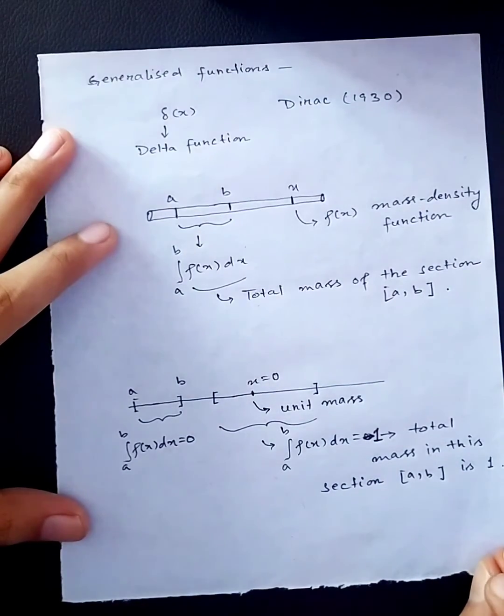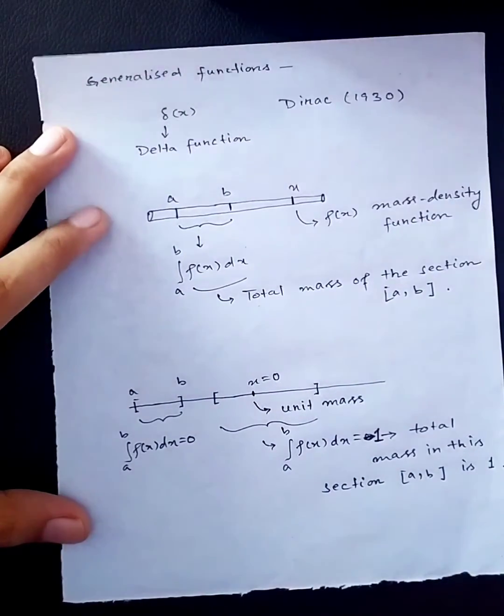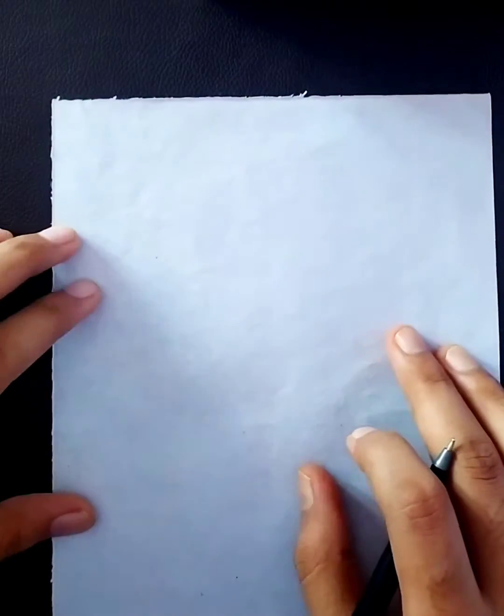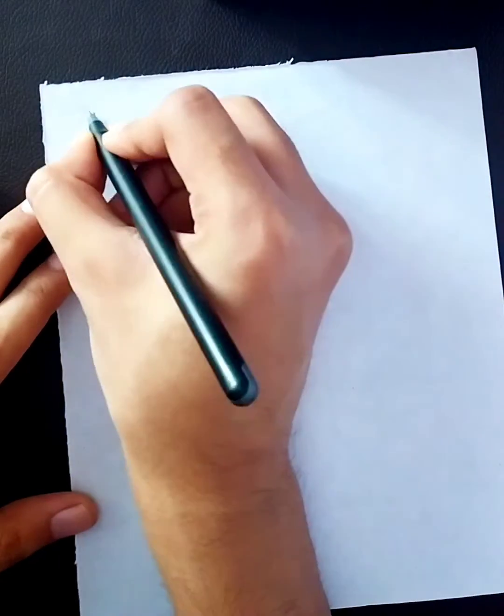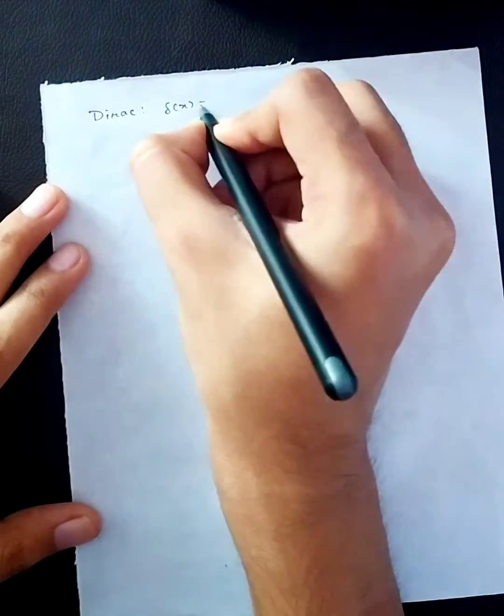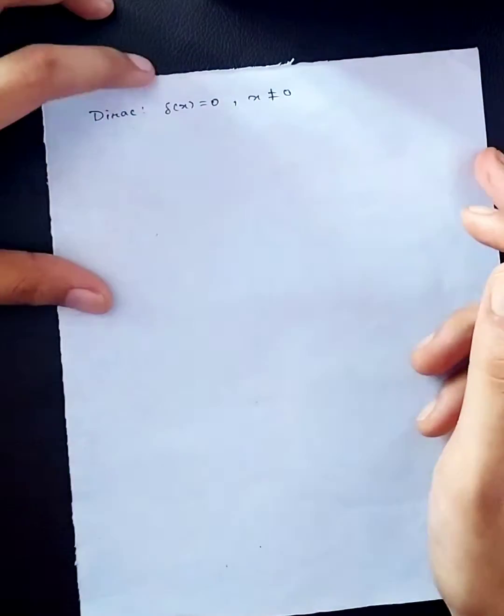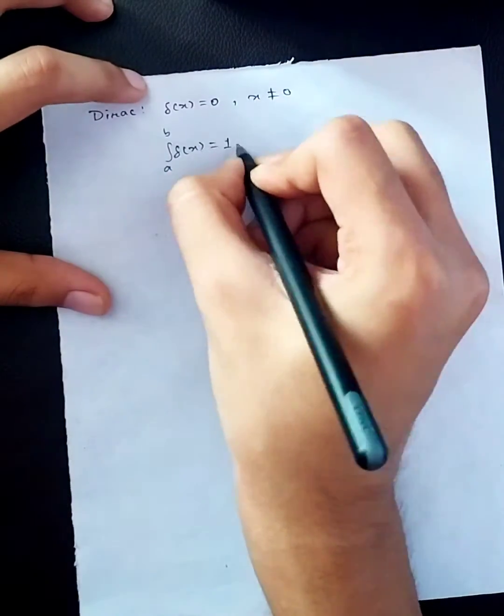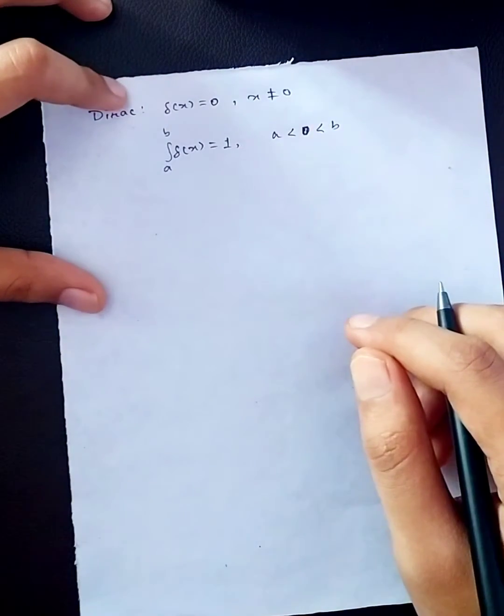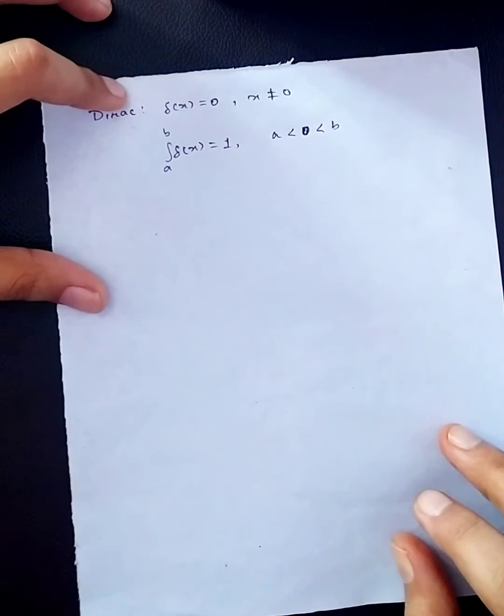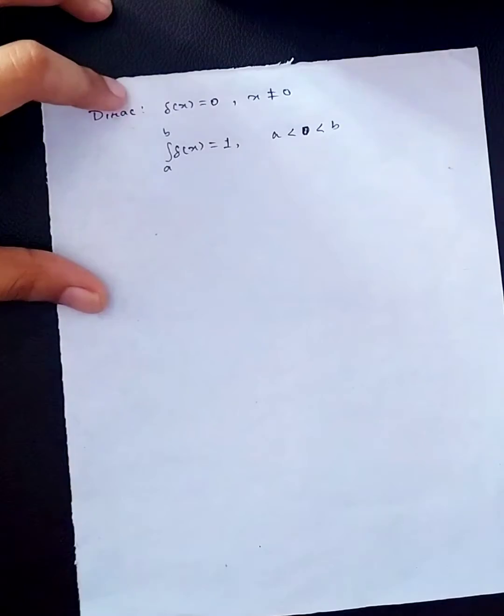From the physical point of view, the mass density function is 0 everywhere except at x equals 0, where it is infinite, because a finite mass is concentrated in 0 length. So Dirac introduced a function del x, having just those properties we have seen. This delta function is an example of generalized function. In our next video we will give the definition of generalized functions and analyze it properly with more examples.